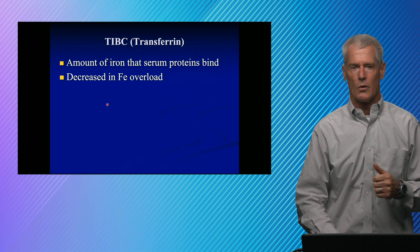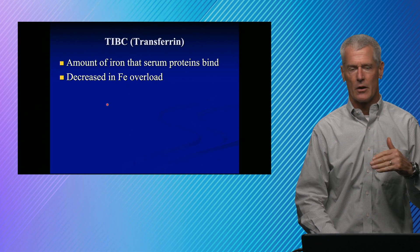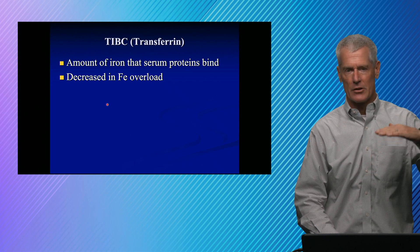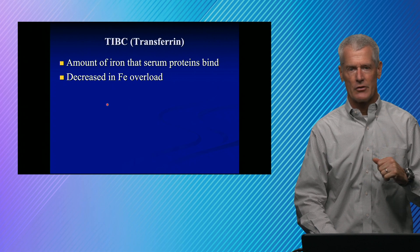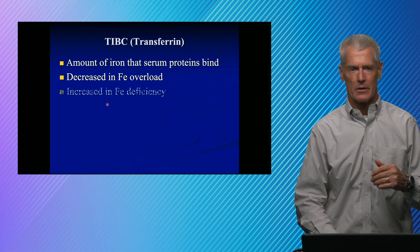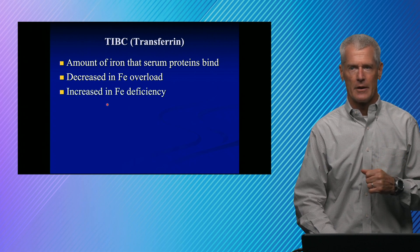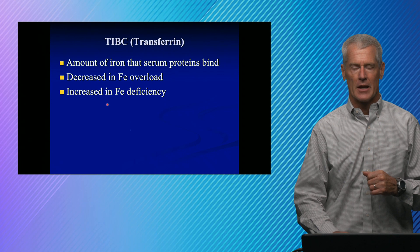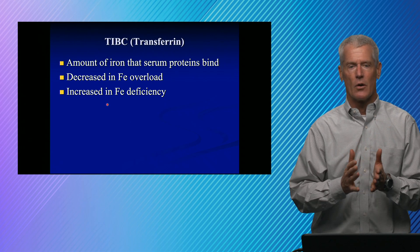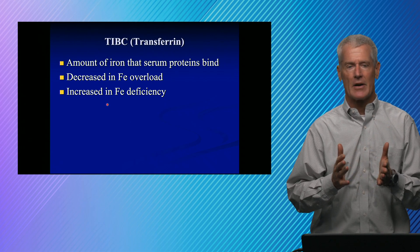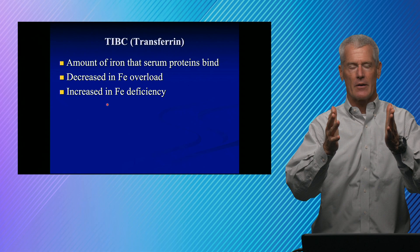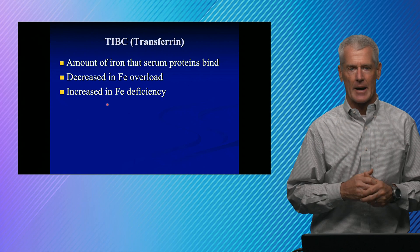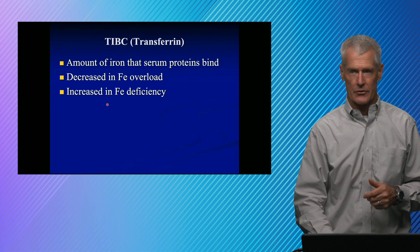In iron overload, your body responds by dropping your transferrin because you have too much iron and you don't want to hold on to it. It goes up in iron deficiency — you don't have enough iron, so you upregulate transferrin to try to capture whatever iron is there.